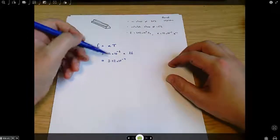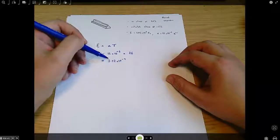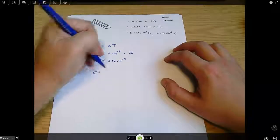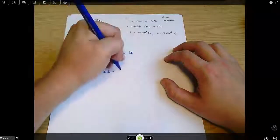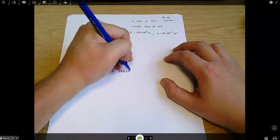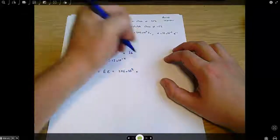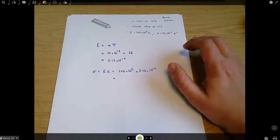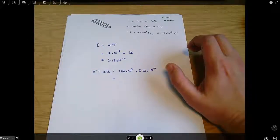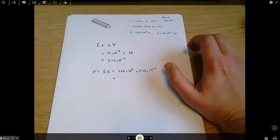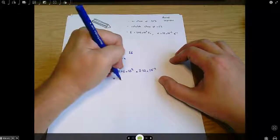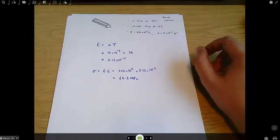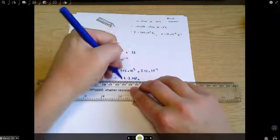So the stress is going to be connected to this strain by the Young's modulus. So we can say okay stress equals Young's modulus times strain which is 206 times 10 to the 9 multiplied by 3.12 times 10 to the minus 4 which equals 64.3 megapascals. So that's the stress in the length of the rail due to that temperature change if it's completely fixed.